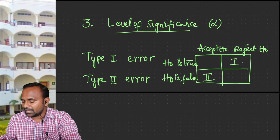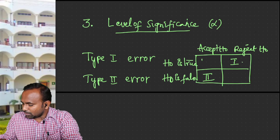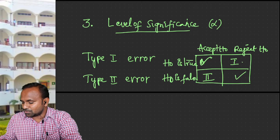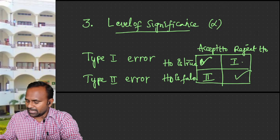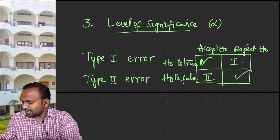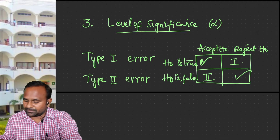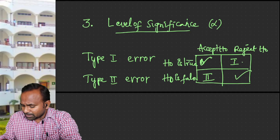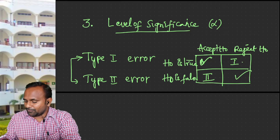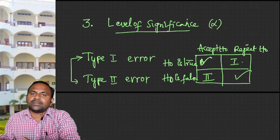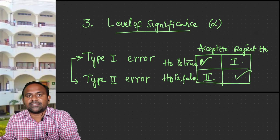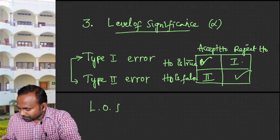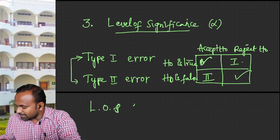These errors may arise in the decision process. The correct decisions are: if the statement is true and you accepted it, or if the statement is false and you rejected it — no errors in these cases. But Type 1 and Type 2 are the wrong decisions. These two errors are inversely proportional to one another — if one increases, the other decreases. The level of significance alpha is nothing but the probability of committing the Type 1 error.